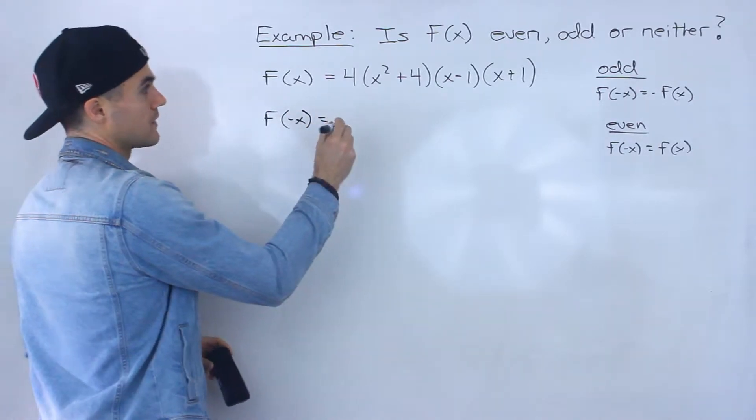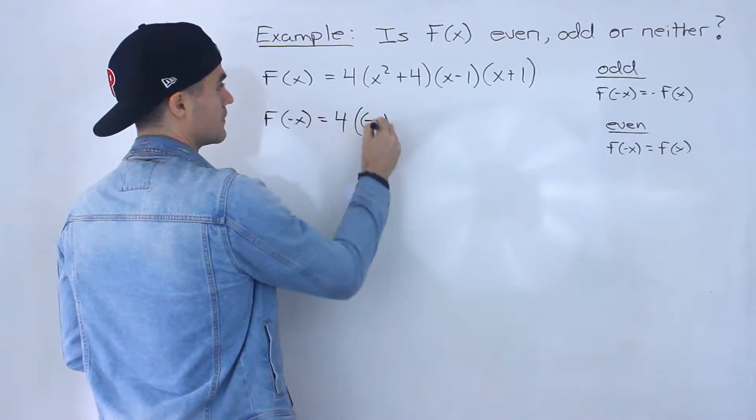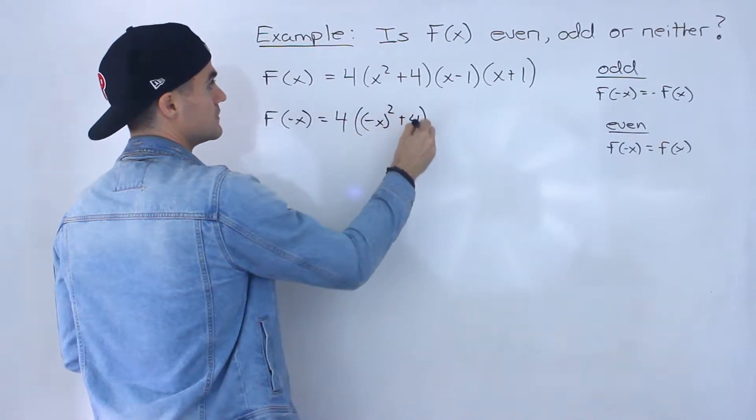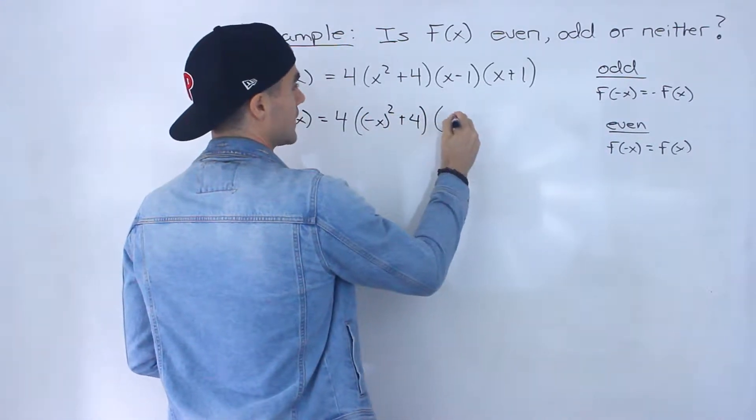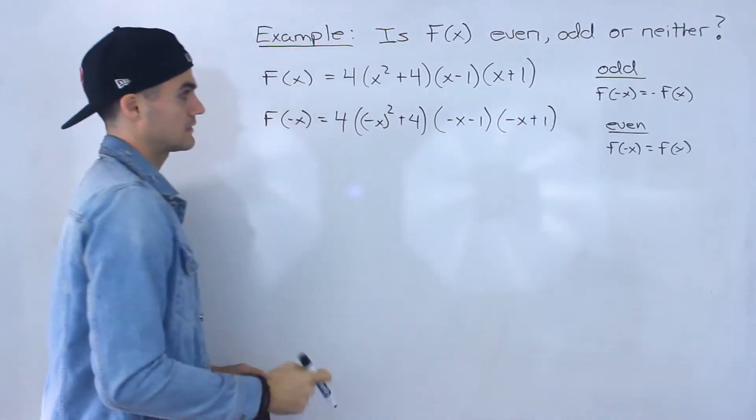So what we're going to do here is plug in negative x for all the x values. So then we'd have negative x minus 1, then we'd have negative x plus 1 like that.